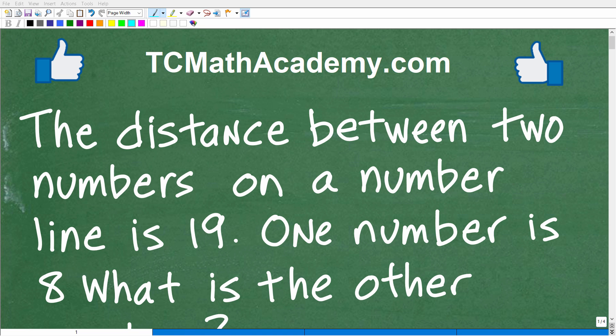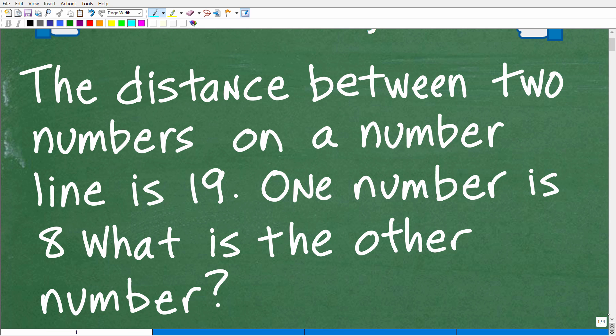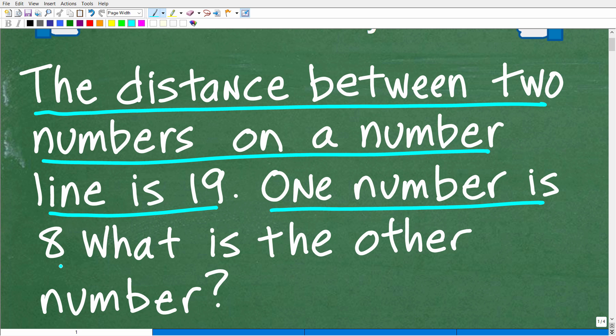Okay, so to be successful in mathematics, you have to be able to work with a number line. And what I have for you here is a lovely little problem that has to deal with a number line. So let's see how well you understand number lines. The problem is the distance between two numbers on a number line is 19. One number is 8. What is the other number?